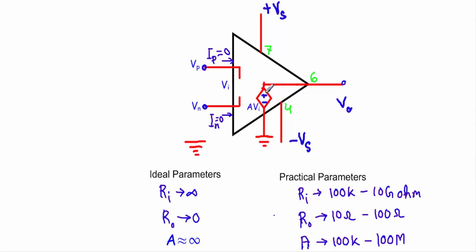In a practical operational amplifier, RI is not infinity but is very high — typically 100 kilohms to 10 gigaohms. The output resistance RO is not zero but is small — typically 10 ohms to 100 ohms. And the open-loop gain is not infinity but is very high — typically 100 kilohms to 100 mega. That's it. Thank you.